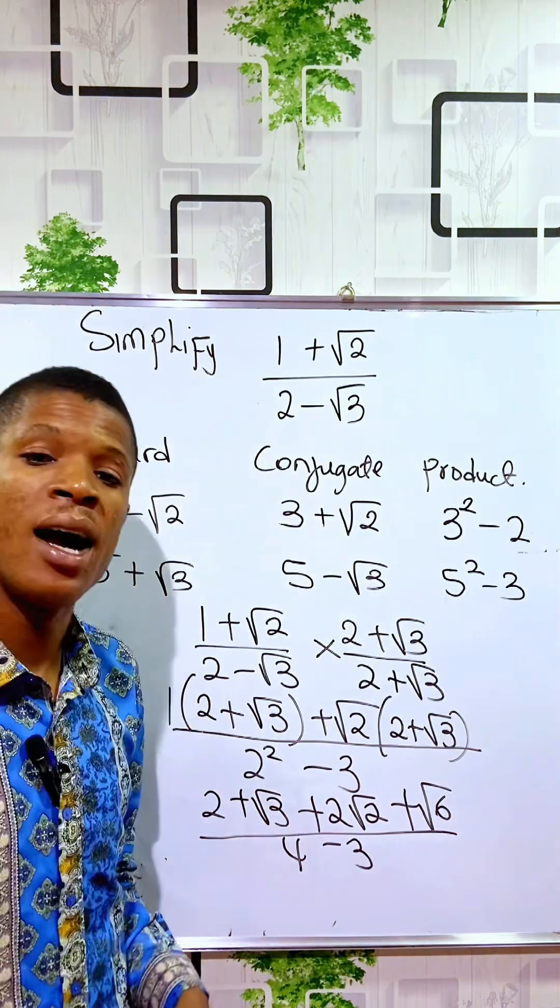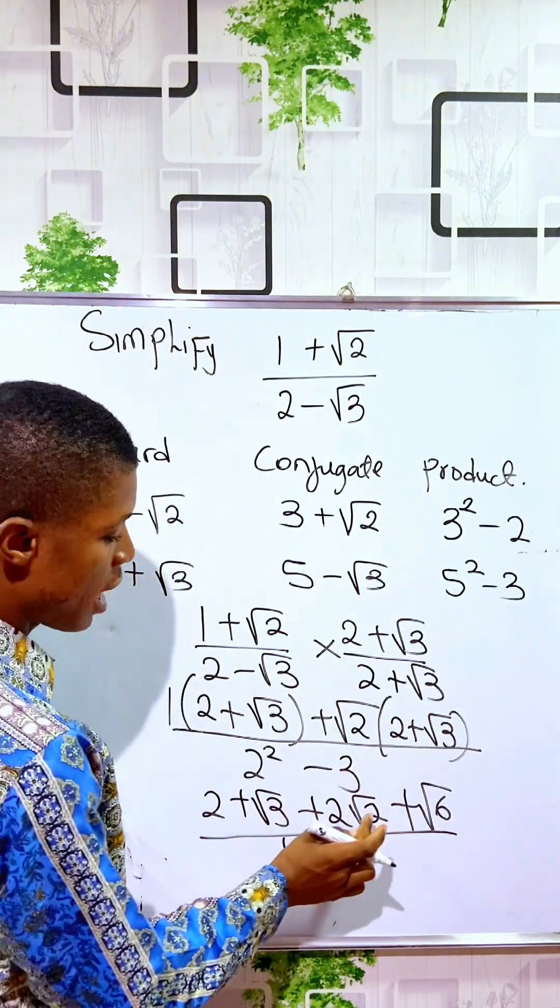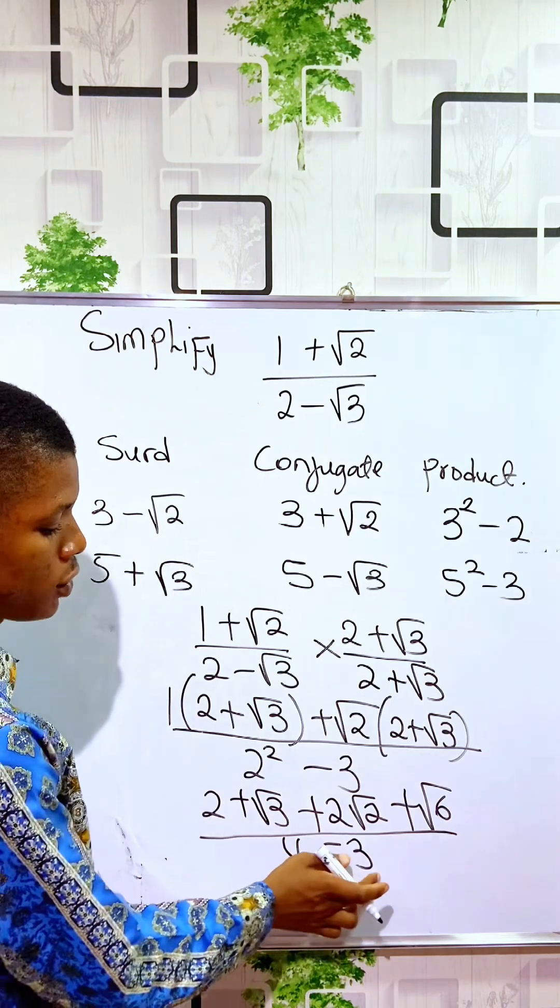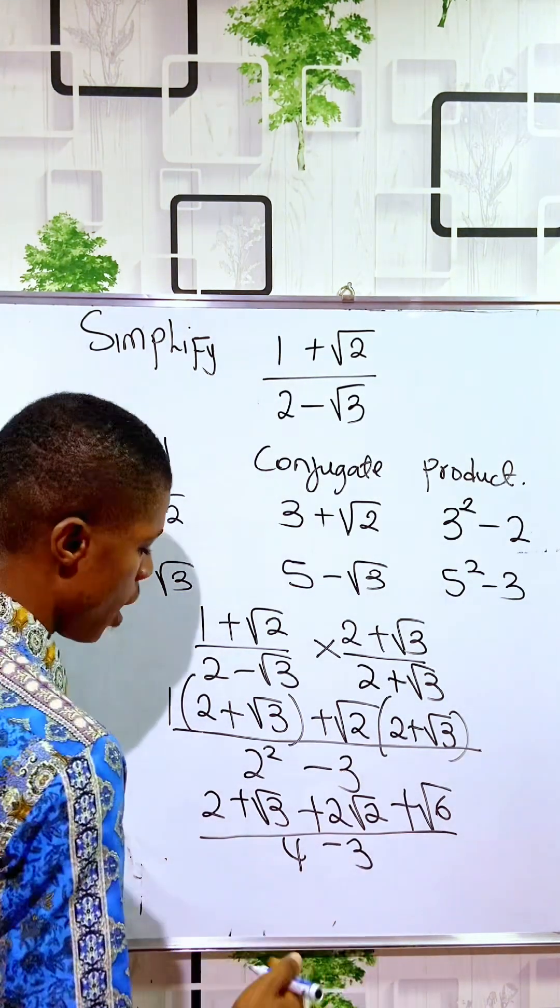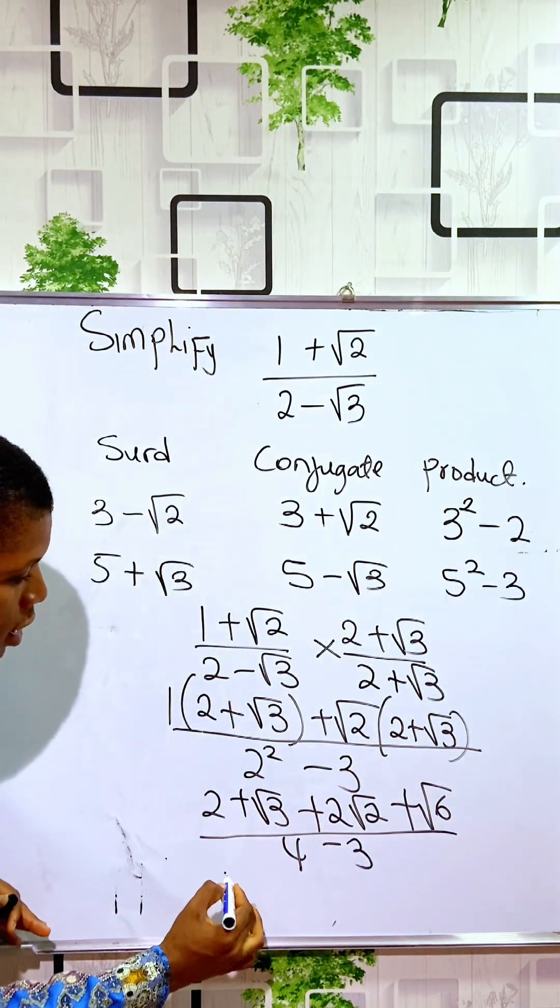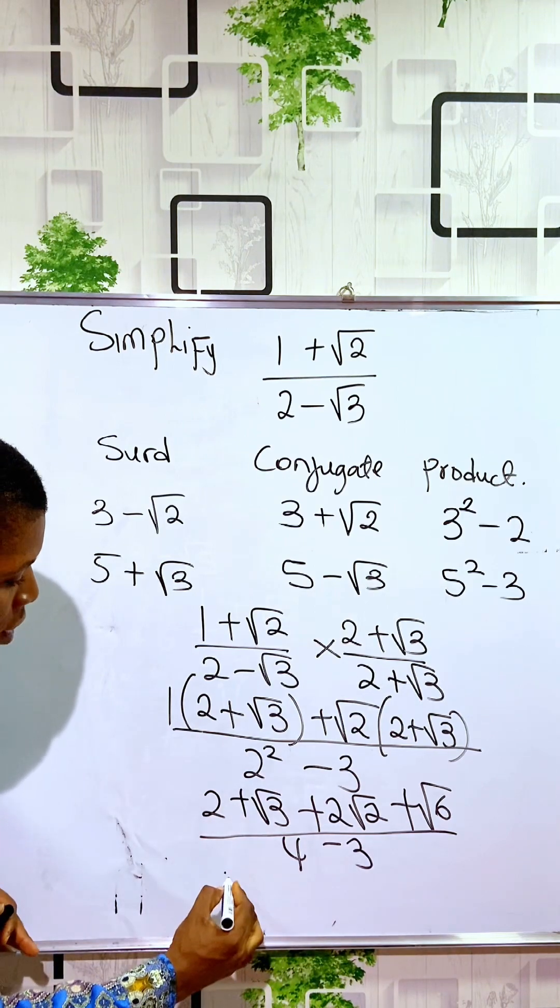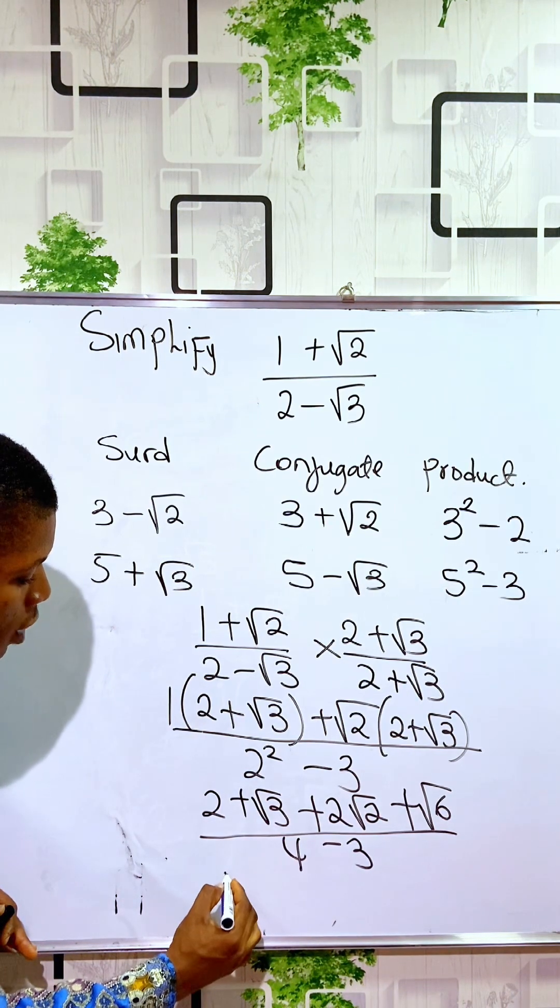And here you can see that we do not have a common term, but 4 minus 3 is 1. So we just write it as, we can arrange it to be 2 + √3 + 2√2 + √6.